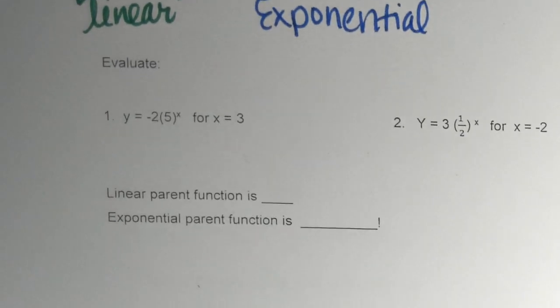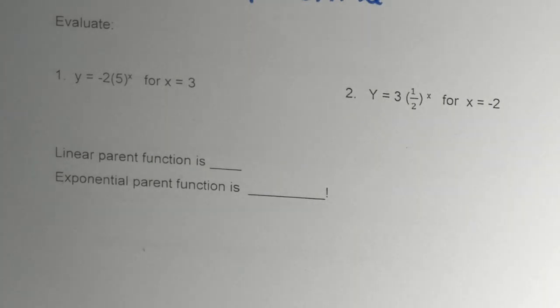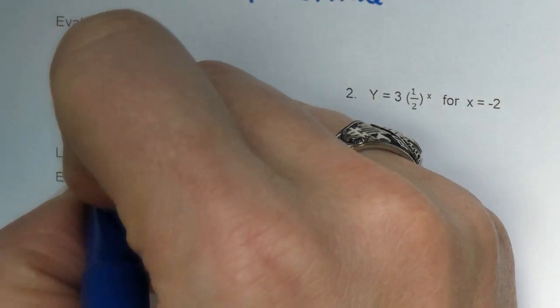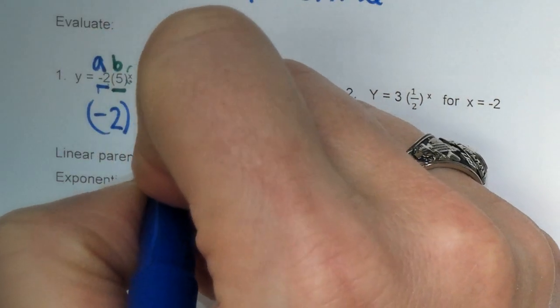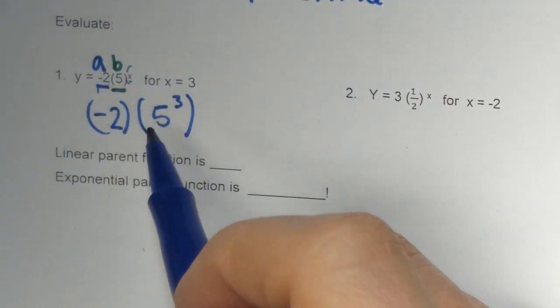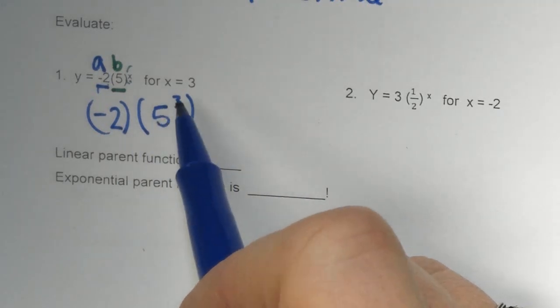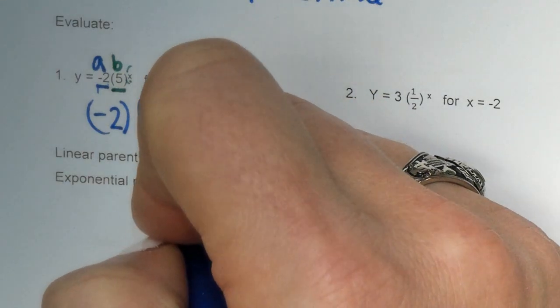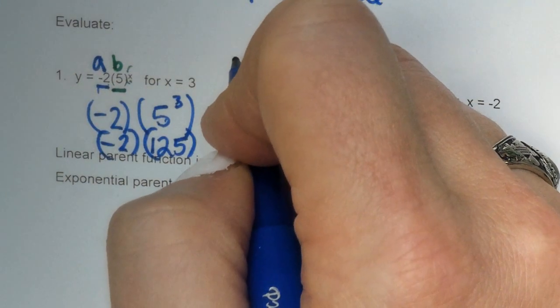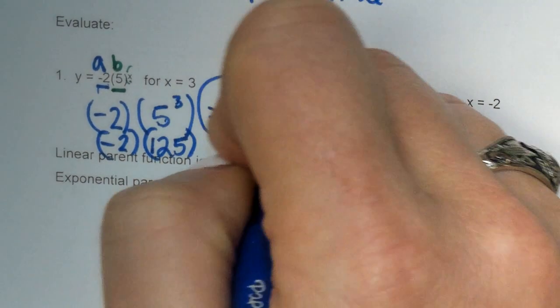It's increasing by two every time. So let's do the bottom part. We're going to evaluate this information. Y equals negative two. That's your a. Times five, which is your b, to your X. And X is three. So let's just solve that. Negative two times five to the X. And the X, they said, was three. So let's figure out, let's remember our order of operations. We're going to do five to the third. That's the exponent first. So five to the third power is five times five times five. It's 125. Negative two times 125 equals negative 250. That's how we solve that.